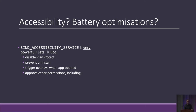Two permissions may seem unusual: ignoring battery optimisations and accessibility. Binding to the accessibility service is very, very powerful — it allows Flubot to do a wide range of things. One thing it lets it do is disable Play Protect, which is Android's built-in malware scanner. It also prevents uninstallation of Flubot. And perhaps most importantly, most core to Flubot's being, it lets Flubot display an overlay — a fake login screen — when a targeted banking app is opened.